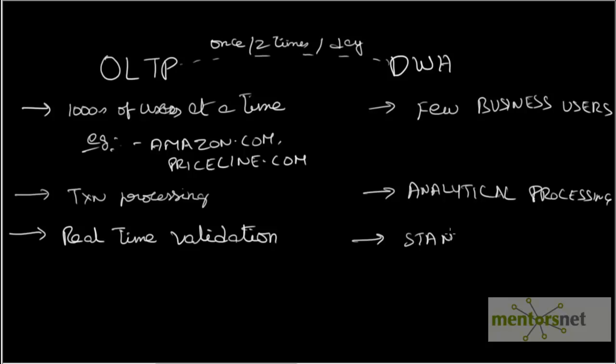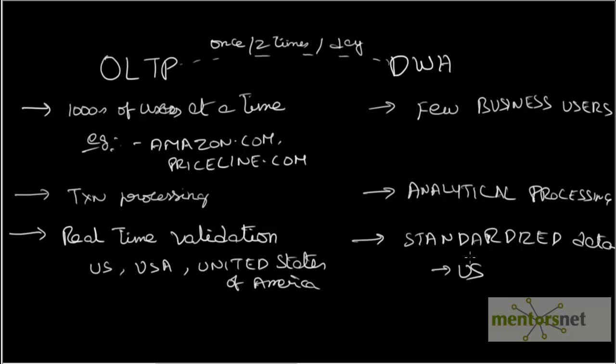This is standardized data which is loaded. For example, in OLTP, one system can have the country like US, one system can have country like USA, one system can have country like United States of America. Whereas in data warehouse, we can standardize all of that to ISO standard country code which is US. The ETL code which is moving the data from OLTP to data warehouse is in our control, so we can apply a lot of standardization while moving the data from OLTP to data warehouse.